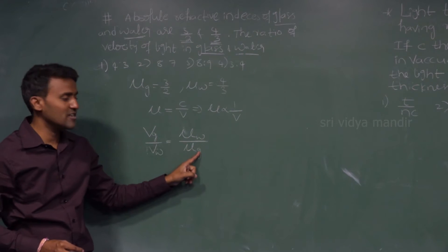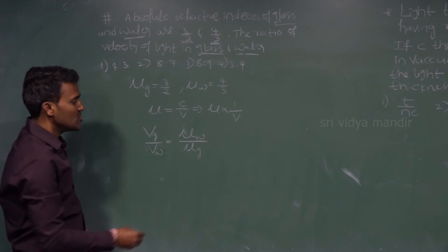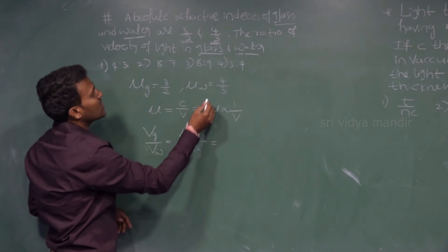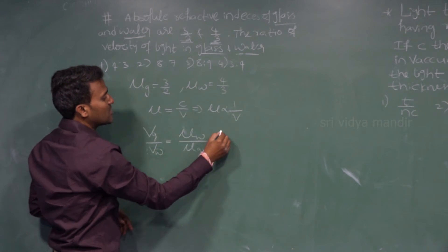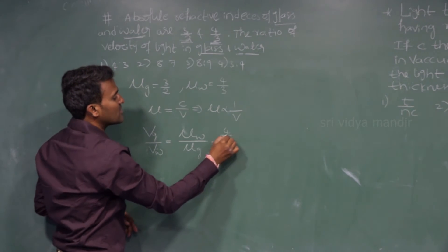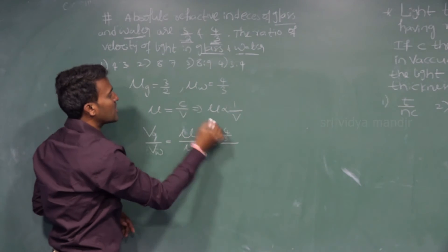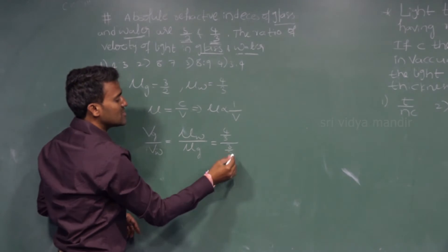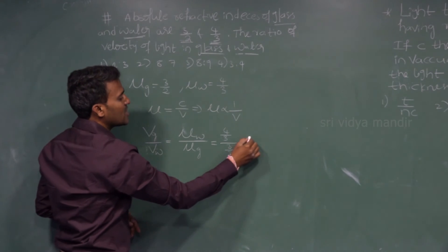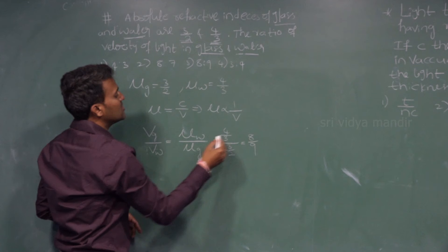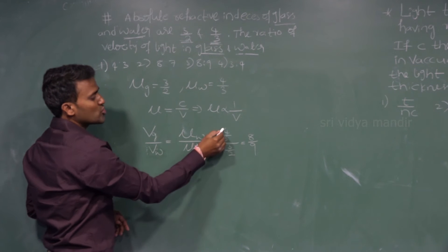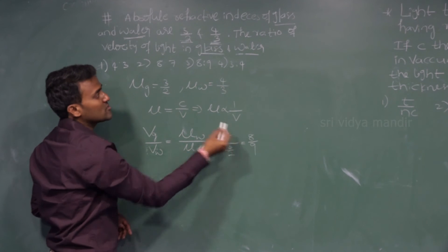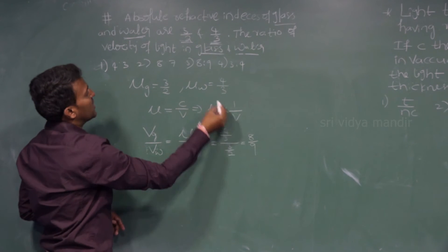Here, glass is in the denominator. So refractive index of water, which is 4/3, divided by refractive index of glass, which is 3/2. We can write this as 8/9 — 2 goes to the numerator: 2 into 4 is 8, and 3 goes to the denominator, giving 8 to 9.